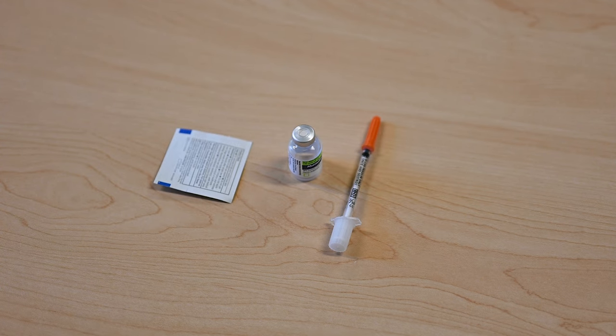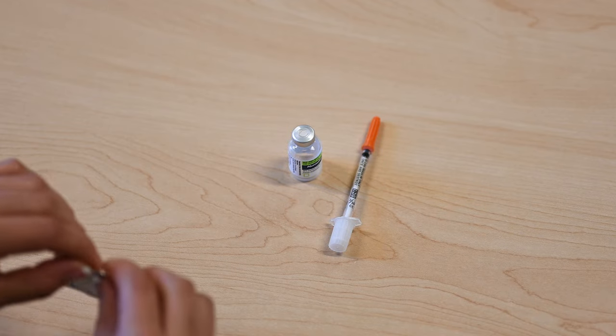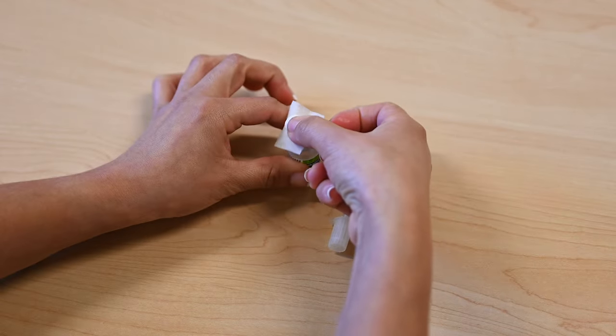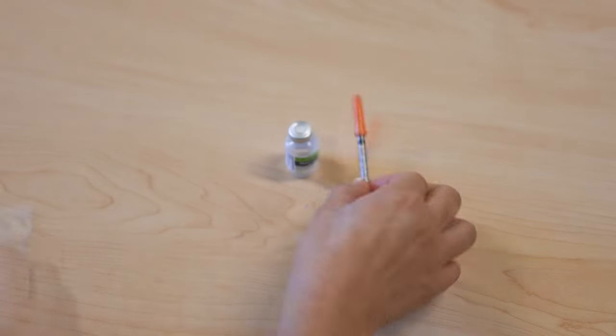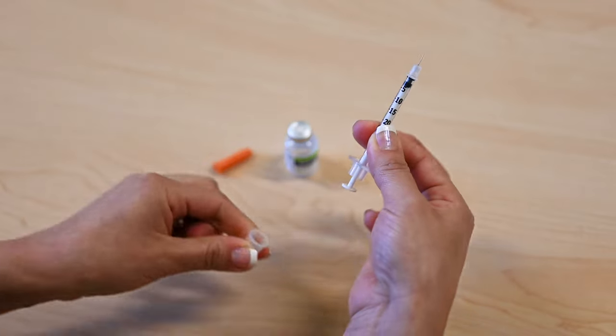Remove the plastic cap if you're opening a new bottle of insulin. If the bottle is open, use an alcohol wipe to clean the top of the bottle. Remove the tops from both the top and bottom of the syringe. Do not touch the needle.